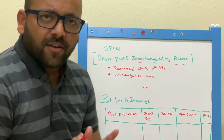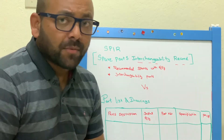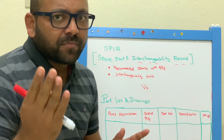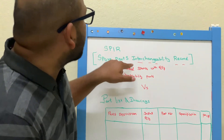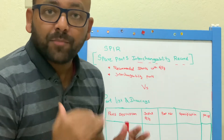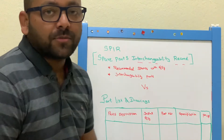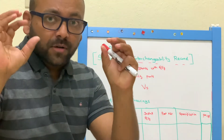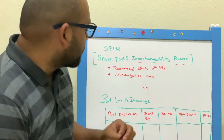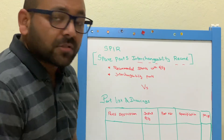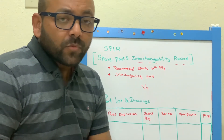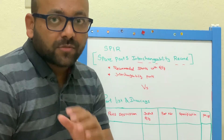Do you think the part list and drawings alone are more than enough for planning maintenance activities? Many people would say yes. But if you ask me — not only this — you also have to refer to the Spare Parts Interchangeable Records. As I explained in my previous video on the list of documents to be prepared for maintenance planning, I mentioned the Spare Parts Interchangeable Records. You have to understand the difference between the part list and drawings and the SPIR. It is mandatory to refer to the SPIR in the right way.